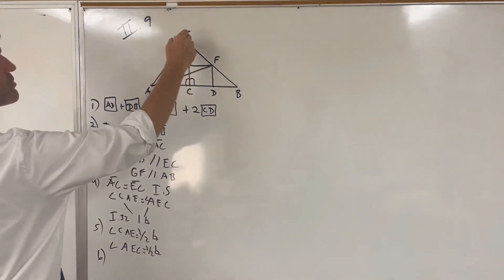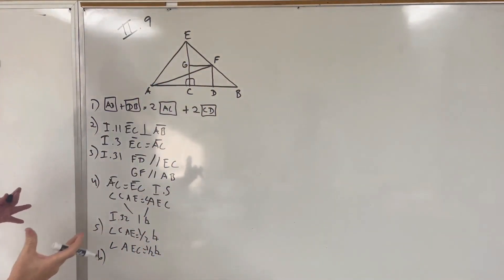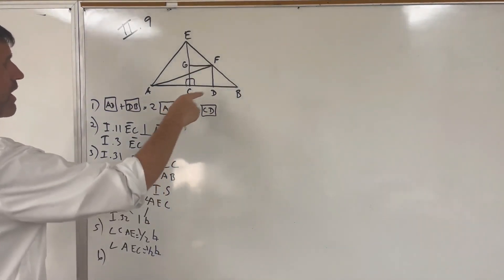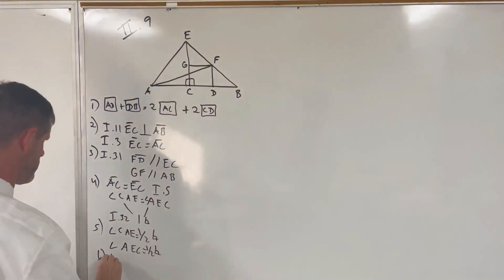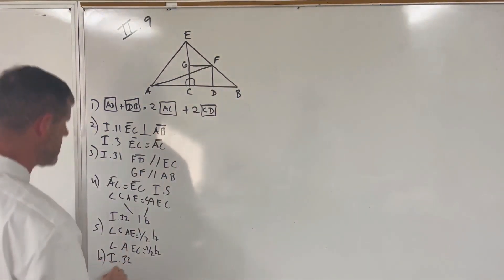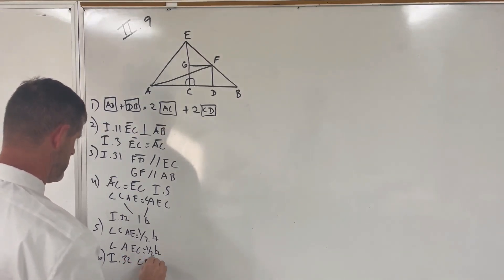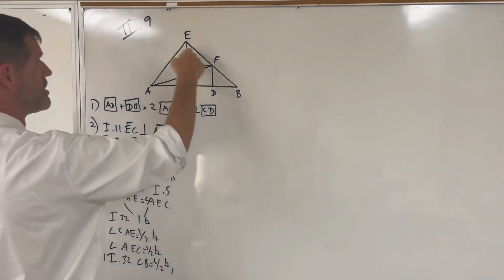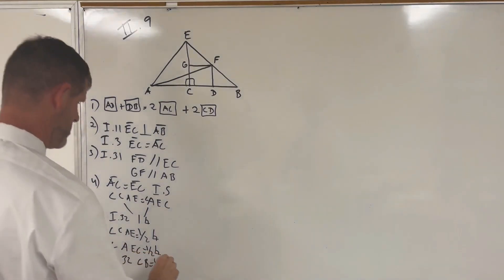Now we go to the triangle on the right-hand side. Since EC equals CB, we can do the same thing. By Proposition 32, the angle at B is half of a right angle, and likewise the angle CEB is half of a right angle.